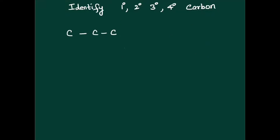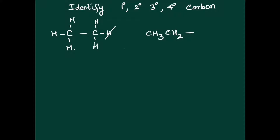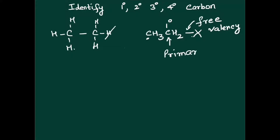Let's move on to the next basic alkyl — ethane. Two carbon atoms, the others are all hydrogen: CH₃CH₃. Remove one hydrogen and what do we have? CH₃CH₂ and a dash — this dash means its valency is still unsatisfied and it is capable of bonding with some other atom or group. It is called the free valency. This carbon is attached to only one other carbon atom, so this is called 1 degree or primary carbon.